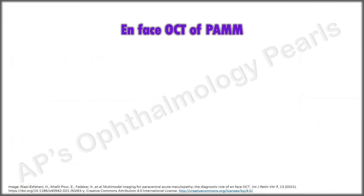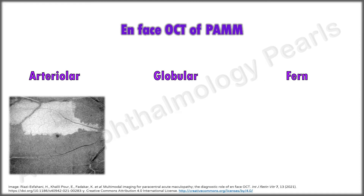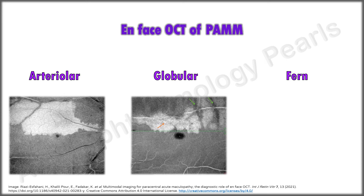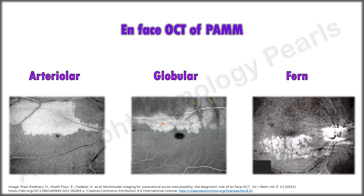Sridhar et al. studied en-face OCT with its advanced capability to accurately designate ischemic areas at different retinal levels, which showed three different patterns in PAM. The arteriolar pattern is a band-like middle retinal hyperreflectivity due to occlusion in the distribution of a major arteriole. The globular pattern may show focal or multifocal ovoid hyperreflective patches. A fern-like pattern shows perivenular hyperreflectivity, mostly seen in CRVO cases. This picture is that of a branch retinal artery occlusion with fern pattern. If a cilioretinal artery occlusion and a CRVO are present together, both an arteriolar and fern pattern may be seen.